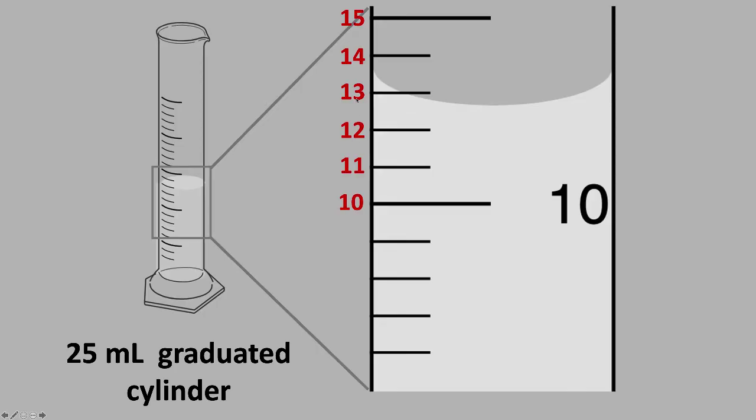So 10, 11, 12, 13, 14, 15 milliliters. Clearly the line, the bottom of the meniscus, is more than 12 milliliters and less than 13.